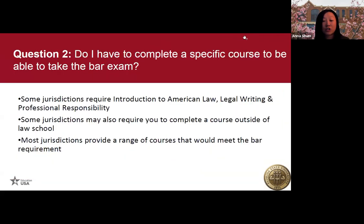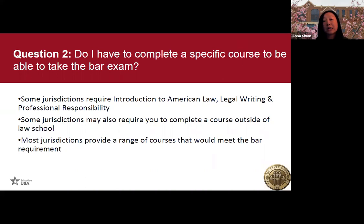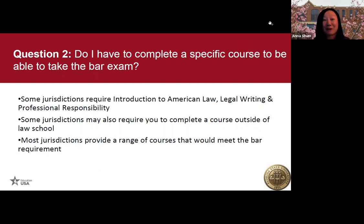The general program, similar to many others, may have one or two requirements but otherwise you can take whatever you want — the easiest way to satisfy bar requirements. The most difficult is our environmental law program, where you must take all credits under that specific curriculum, making it tricky for the bar exam unless the jurisdiction is very flexible. Do I need to take a specific course to be able to take a bar exam? Unfortunately it depends on the jurisdiction. Some require introduction to American law, legal writing, and professional responsibility. Some offer waivers, and some jurisdictions require courses outside of law school.